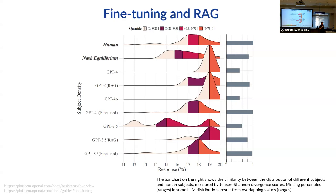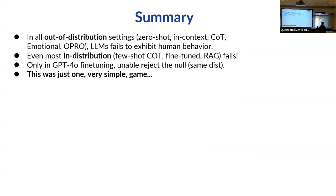We also tried fine-tuning and RAG. Everything else failed except for one instance: fine-tuning the GPT-4o model — that was the only case where we could not reject that the distributions were from the same distribution based on a permutation test. In summary: all out-of-distribution and advanced prompting approaches fail to replicate human behavior, and even in-distribution or example-based approaches all fail except that one fine-tuning instance.